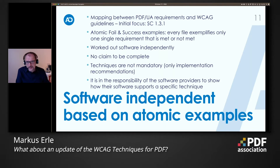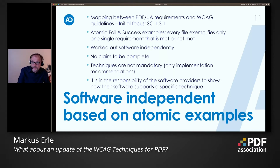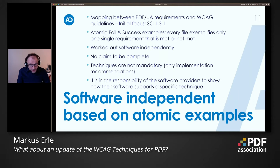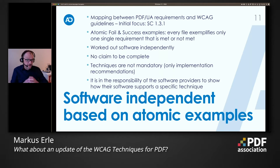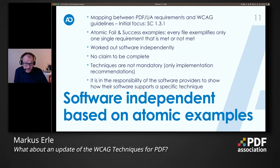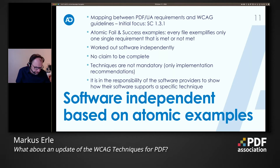We developed atomic fail and success examples. Atomic means: if possible, we create a file that exemplifies only one single requirement at a time, and this requirement is either met or not met. A pass example is where the requirement is met; a fail example is where it is not met. The goal is to work out all these files software-independently — we are focused on the files, on the result: how should a WCAG-compliant file look?